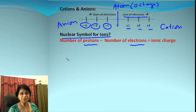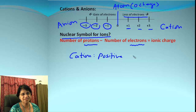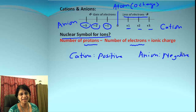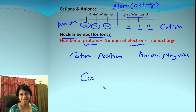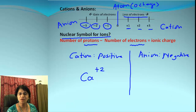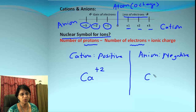Now, how do we represent an ion? We write the symbol for the atom and then put the positive or negative charge on the right-hand side top corner. For example, calcium ion is a cation with a positive 2 charge. The symbol for calcium is Ca, so we write Ca with positive 2 in the top right corner. For a negative ion, take chlorine: it becomes chloride ion, which is a negative ion with a charge of negative 1. The symbol is Cl with negative 1 in the top right corner.